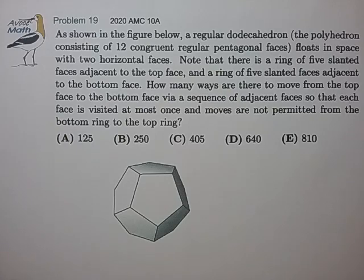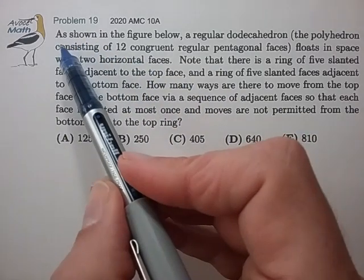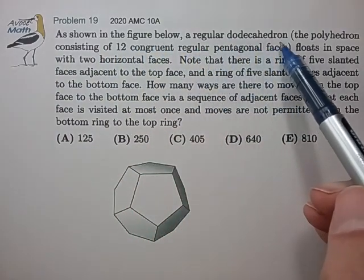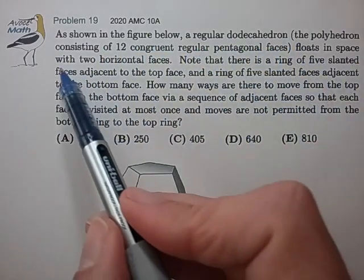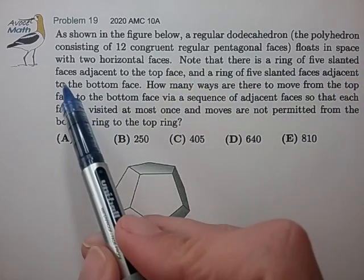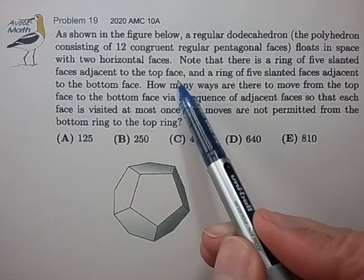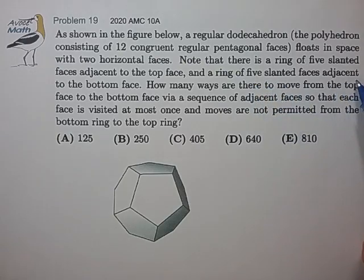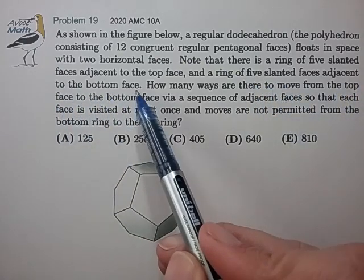Hi, this is problem 19 from the 2020 AMC 10A. As shown in the figure below, a regular dodecahedron floats in space with two horizontal faces. Note that there is a ring of five slanted faces adjacent to the top face and a ring of five slanted faces adjacent to the bottom face.